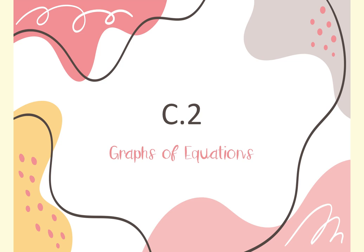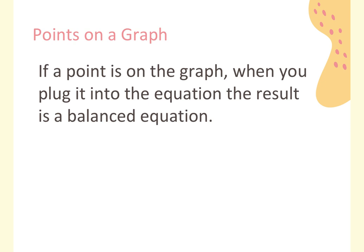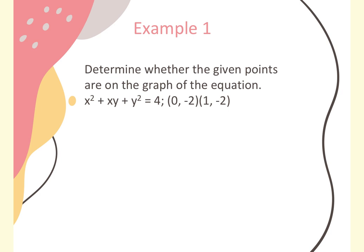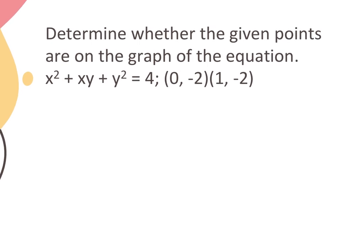C2 is graphs of equations — these can involve parabolas, square roots, absolute values, and lines. We're going to talk about how to graph them, how to find intercepts, and how to find symmetry. All of this plus what we did for C1 is on Wednesday's quiz, which we'll review more tomorrow.